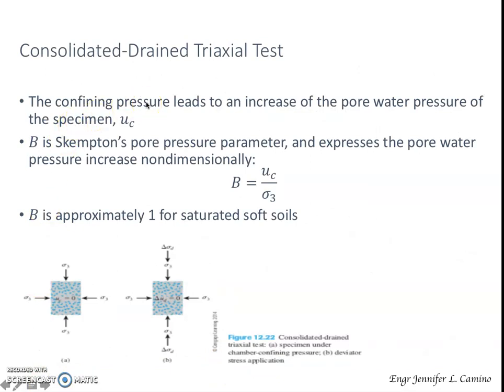For the triaxial test, we have three standard types that can be conducted. First is the Consolidated Drained triaxial test. We also have the Consolidated Undrained test, which is called the CU test, and the Unconsolidated Undrained test, which is the UU test.